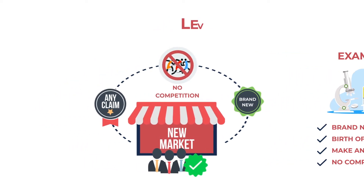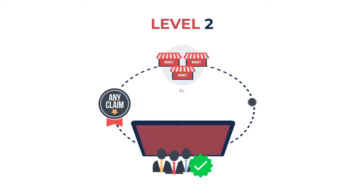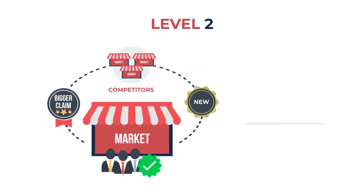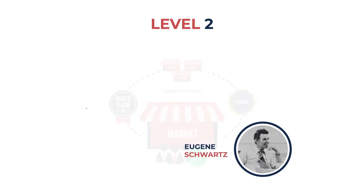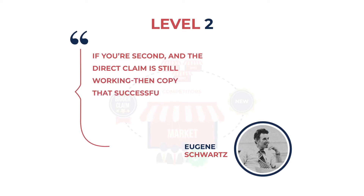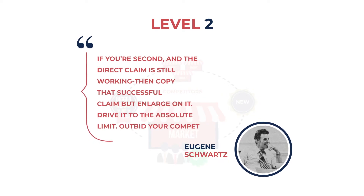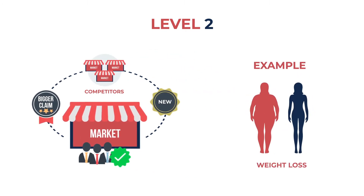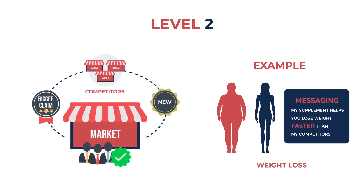Next up is level two. This is very similar to level one, except now there are competitors. So you just need to make a bigger claim. This is the time when you'll often hear things like bigger, better, faster. Here's what Eugene Schwartz has to say about level two: If you're second and the direct claim is still working, then copy that successful claim, but enlarge on it. Drive it to the absolute limit. Outbid your competition. A very popular example in a level two market is weight loss — you could say my supplement helps you lose weight faster than my competitors. That's it.